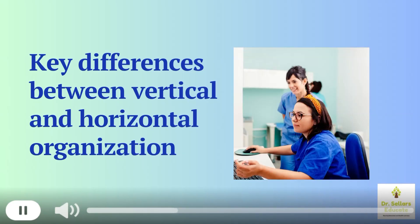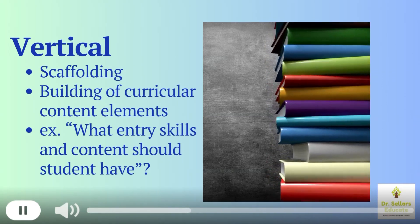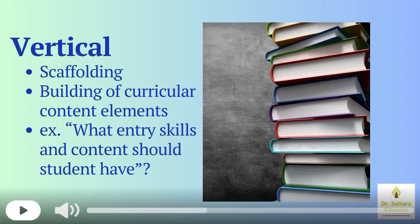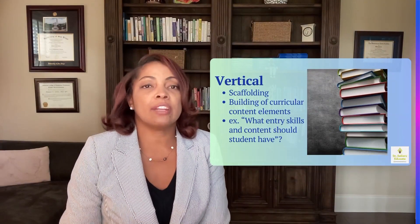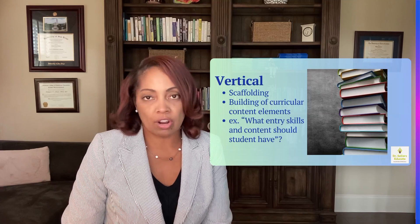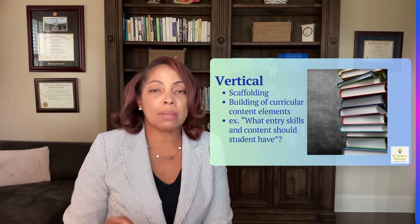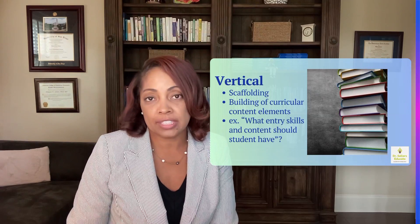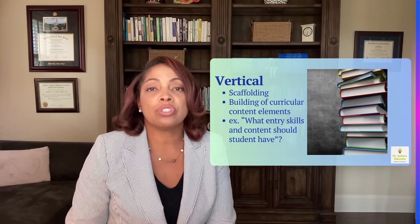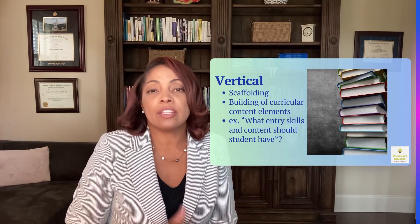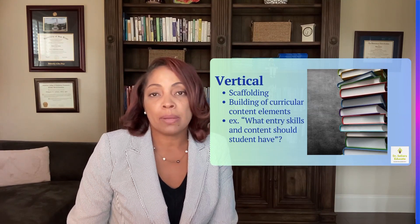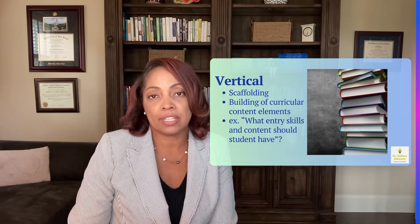So, horizontal and vertical alignment — we want to make sure that we have both when it comes to our nursing curriculum. Starting with vertical alignment, it is a scaffolding process. We build on curricular content elements, and we often ask: what are those entry skills and content that a student should have when they leave our course? If we're not sure about those specific skills, we should look back at our learning objectives, map our content, collaborate with clinical faculty, skills, and sim lab faculty to ensure it is mapped back to learning objectives.